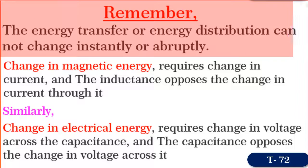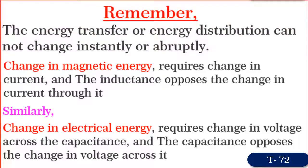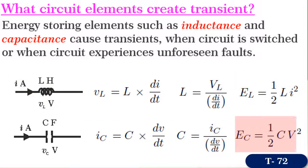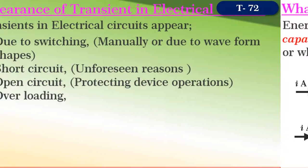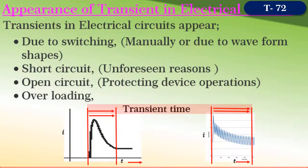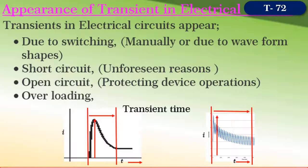Energy transfer or energy distribution during transients cannot happen instantly or abruptly, because the change in magnetic energy requires a change in current, but inductance opposes the change in current. Similarly, a change in electrical energy requires a change in voltage, and the capacitance element opposes the change in voltage. That is exactly the reason why the change in voltage and currents takes some time to reach the steady state values during transients. This time could be very small — in terms of milli or microseconds — but the magnitudes of voltages and currents during transients might be so large as to cause damage to the system.